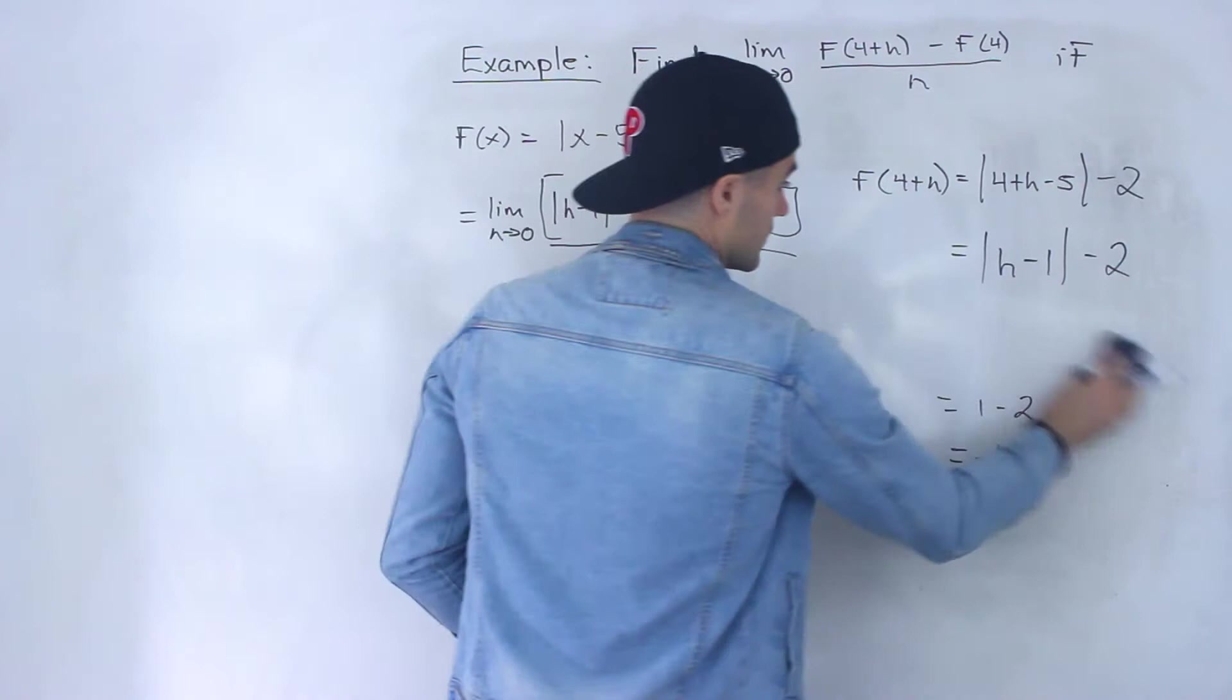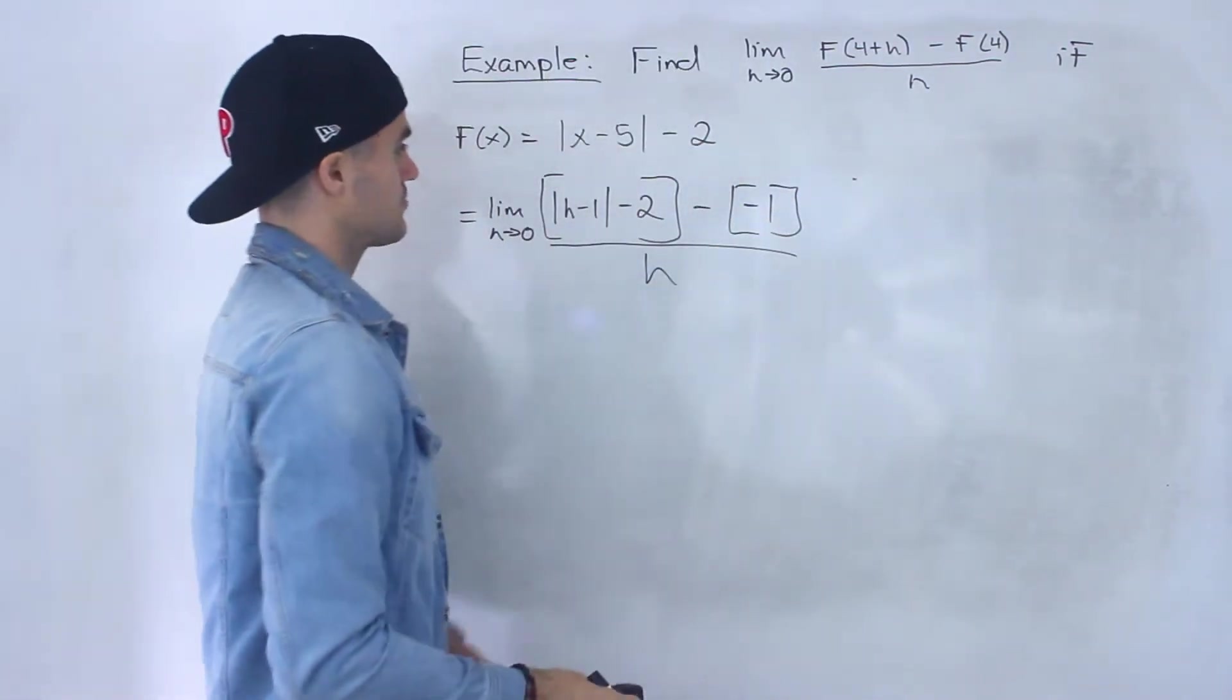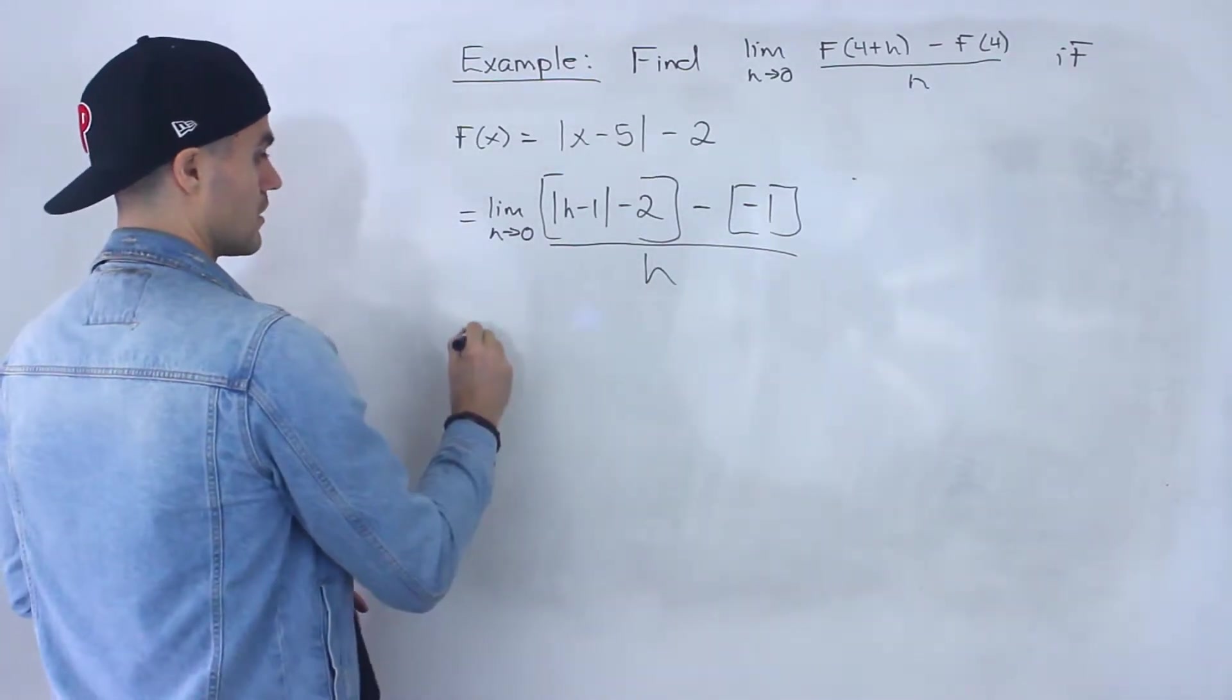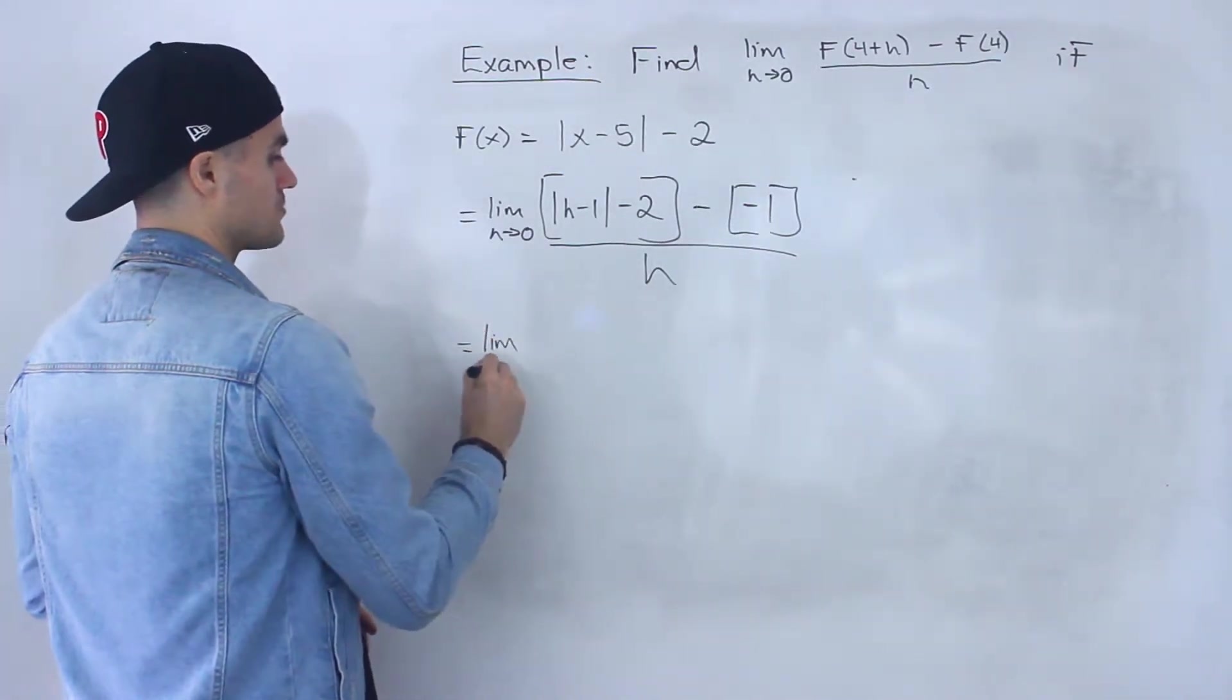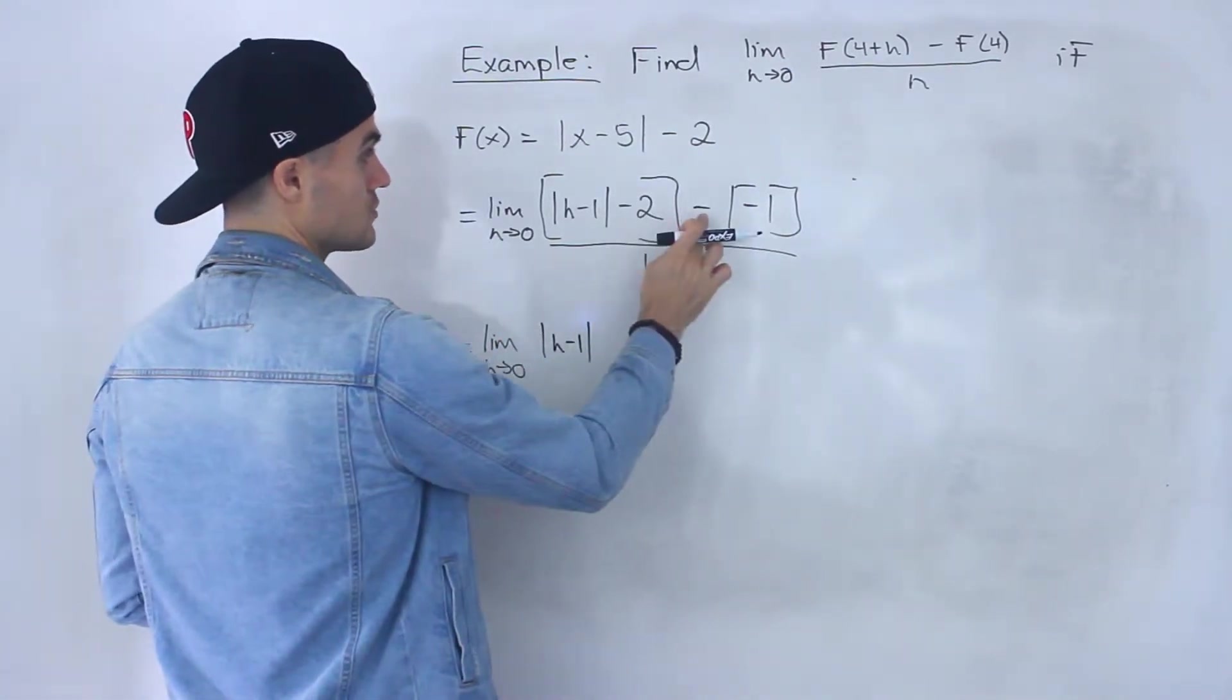Now what we've got to do is simplify this here. So we'll have the limit as h approaches 0 of the absolute value of (h-1).